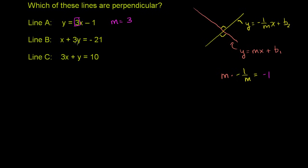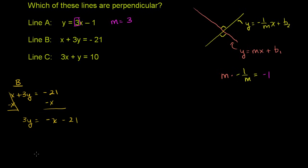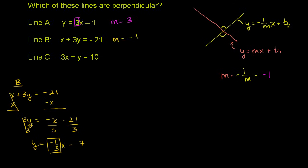Line b is in standard form, so let's put it in slope-intercept form. We have x + 3y = -21. Subtracting x from both sides gives 3y = -x - 21. Dividing both sides by 3, we get y = (-1/3)x - 7. So line b's slope is negative 1/3.